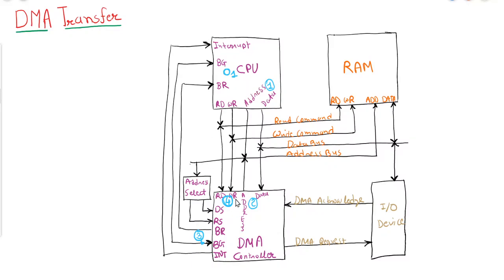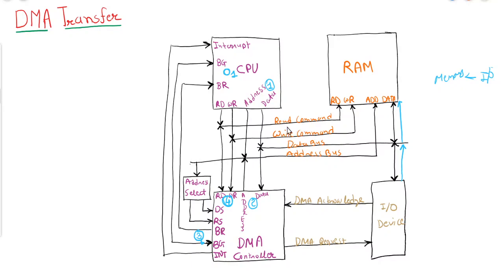After initializing and getting control, the DMA will start the operation. Let's assume we are transferring data from an IO device to memory. The DMA will send a request to the IO device, and the IO device will acknowledge the DMA. After acknowledging, the IO device will put a word into the data bus, and from the data bus it will be transferred to the RAM. At that time, a write command will be used, meaning this data will be written into the RAM.